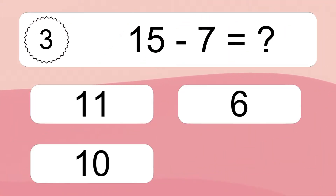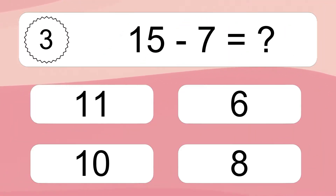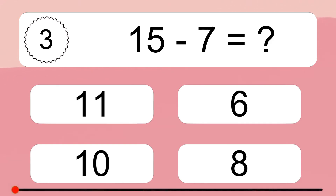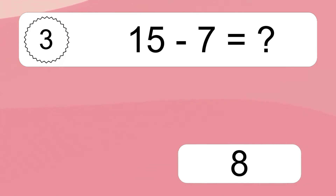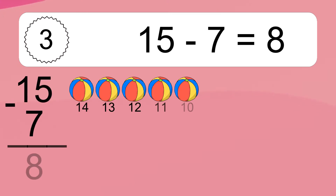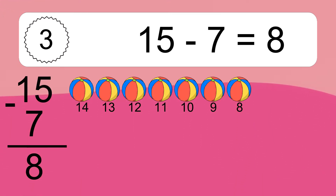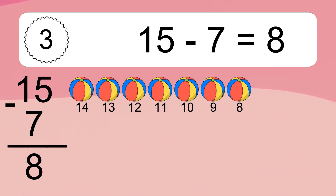15 minus 7 equals what? 15 minus 7 equals 8. Let's count it: 14, 13, 12, 11, 10, 9, 8.